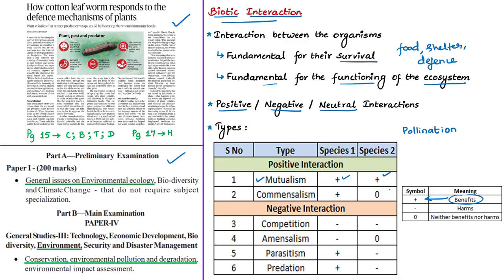In pollination, pollen grains from the male anther of a flower are transferred to the female stigma. One of the ways plants produce offspring is by making seeds, and seeds can only be produced when pollen is transferred between flowers of the same species. Bees help in this transfer of pollen. So in this mutualism, bees get nectar or honey whereas the stationary plants reproduce with the help of bees through seeds. Both species are benefited, making it a positive interaction.